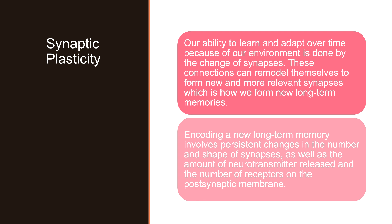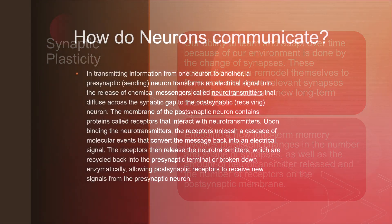Encoding a new long-term memory involves persistent change in the number and shapes of synapses, as well as the amount of neurotransmitter released and the number of receptors on the postsynaptic membrane. If the postsynaptic neuron releases more neurotransmitters at a higher concentration, there's a higher probability of receptors making contact with the neurotransmitter, meaning the signal will be stronger. Similarly, if the postsynaptic neuron has a larger amount of receptors for that specific neurotransmitter, you can largely affect the intensity of that signal — meaning a much stronger connection.